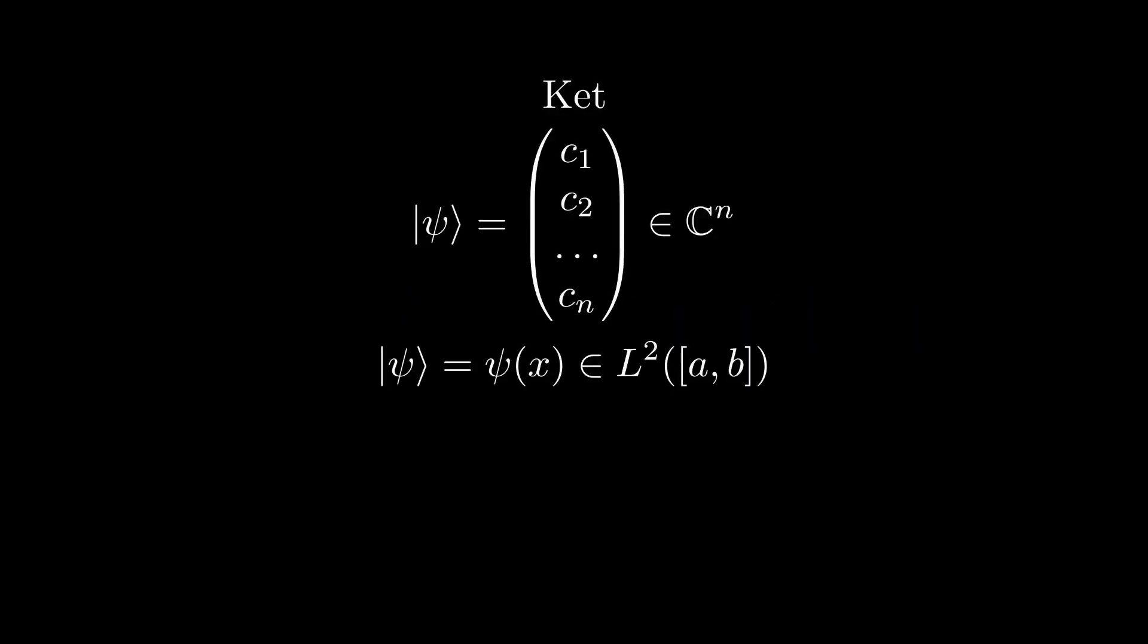A ket is written as follows, and is used to denote an element of a Hilbert space. In finite-dimensional Hilbert spaces, this simply denotes a column vector. In infinite-dimensional Hilbert spaces, we can instead treat a ket as a continuous function, like our position wave function.